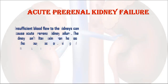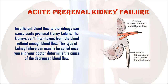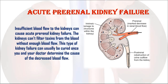1. Acute pre-renal kidney failure. Insufficient blood flow to the kidneys can cause acute pre-renal kidney failure. The kidneys can't filter toxins from the blood without enough blood flow. This type of kidney failure can usually be cured once you and your doctor determine the cause of the decreased blood flow.